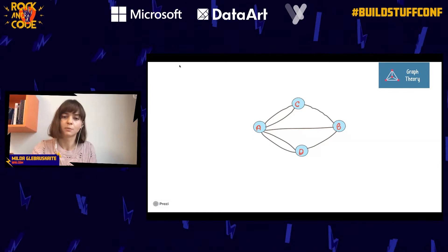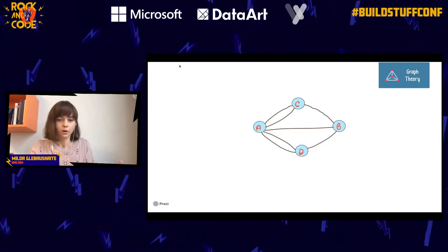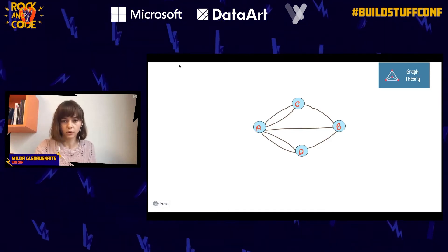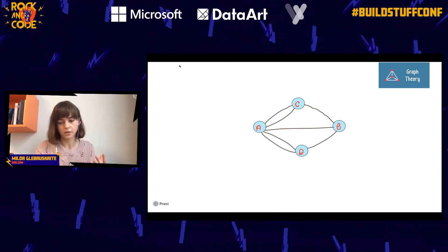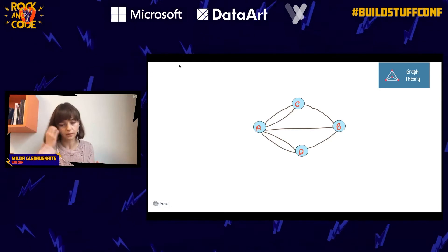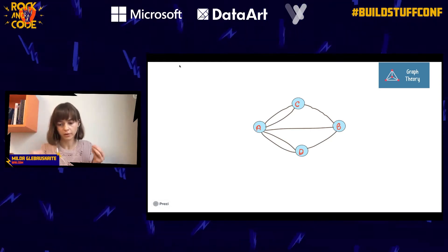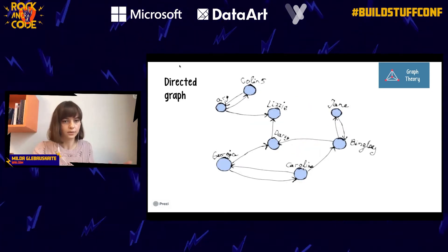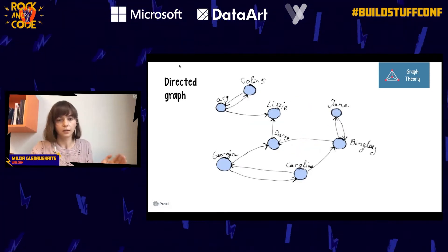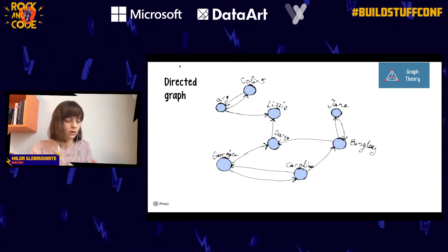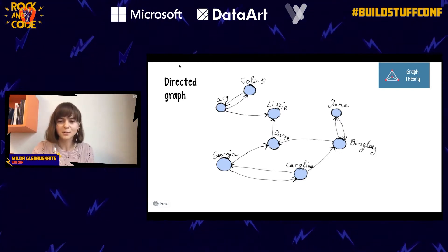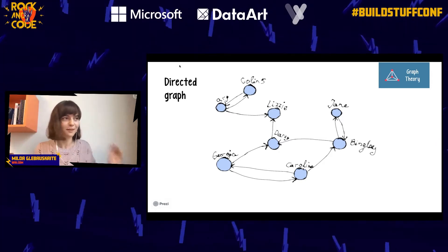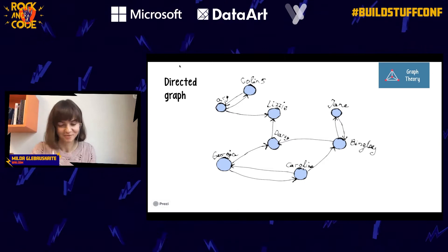When we talk about graphs, we're used to seeing them as circles and lines connecting them, but this is just one of the ways of representing them. The main idea is how we think about graphs. For example, a directed graph has a one-sided relationship between the nodes — like people on Twitter who follow each other, where one person follows another but that person doesn't follow back.